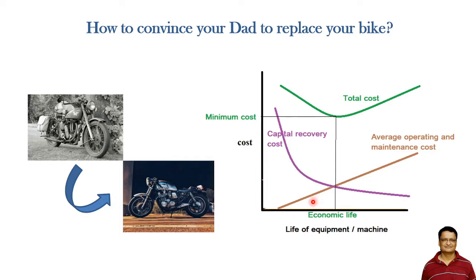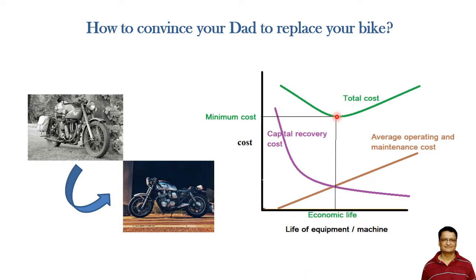There is another kind of cost called the average operating or maintenance cost. As time goes on, this maintenance or operating cost is increasing. So there is a certain period of time at which there is a minimum total cost per year for that particular equipment, and that particular time is called the economical life of that equipment. We are interested in finding out this economical life — at this point, if you replace that machine, you will have to pay a minimum average cost.